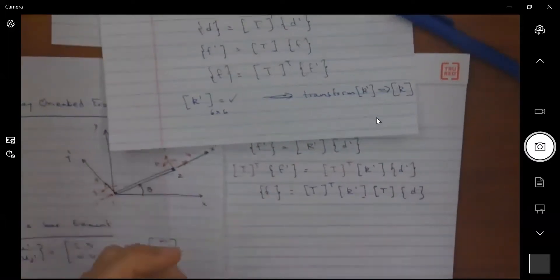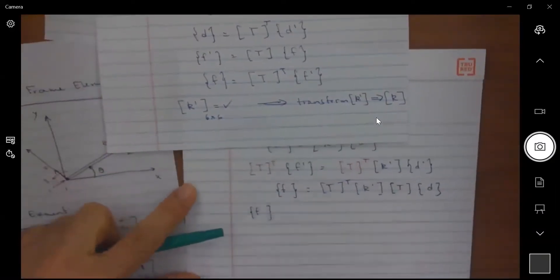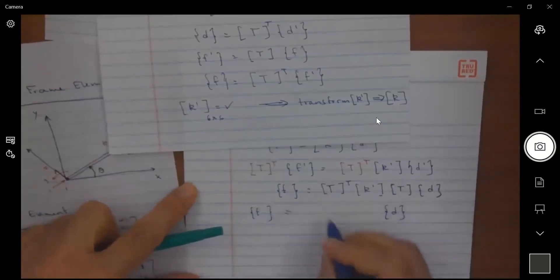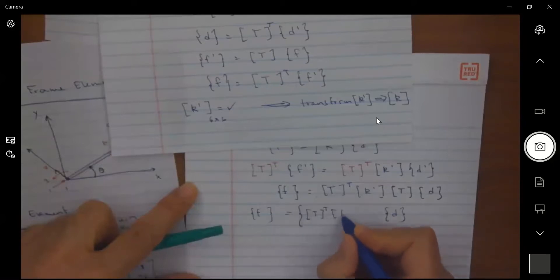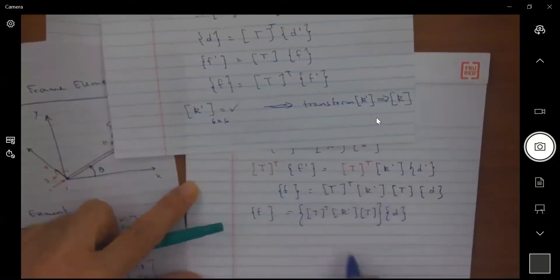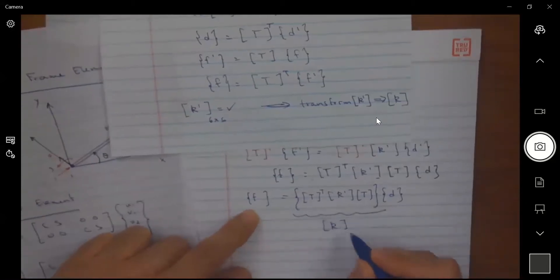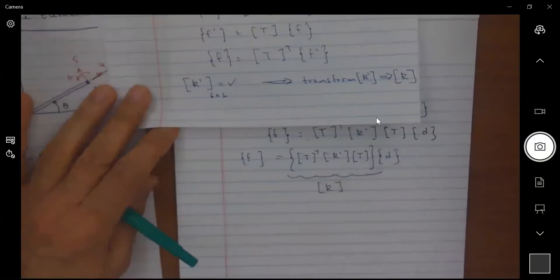You see here I have a relationship between f and d, the force with respect to the global axis and d with respect to the global axis, and I have this term here which is T transpose times k prime times T, which is or will become my stiffness matrix with respect to the global axis. Right, f related to d via k.